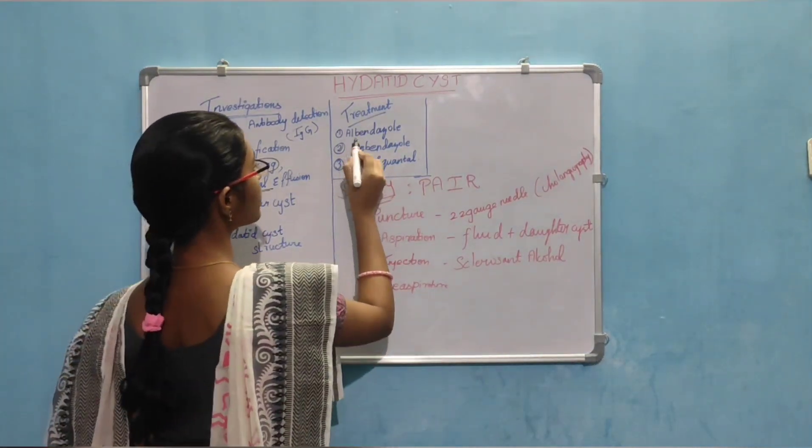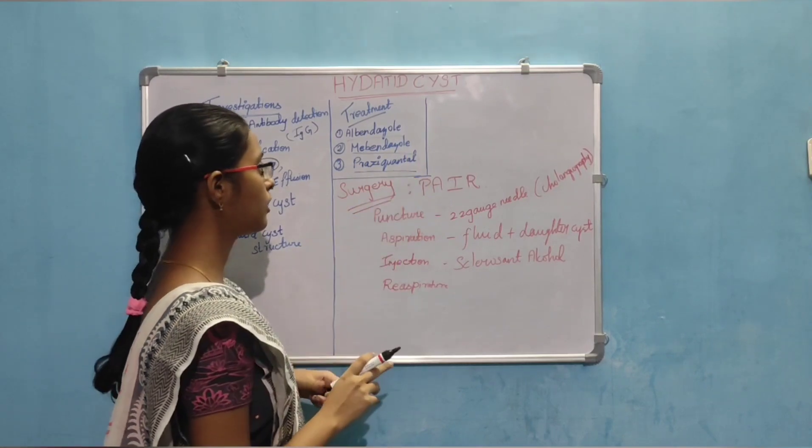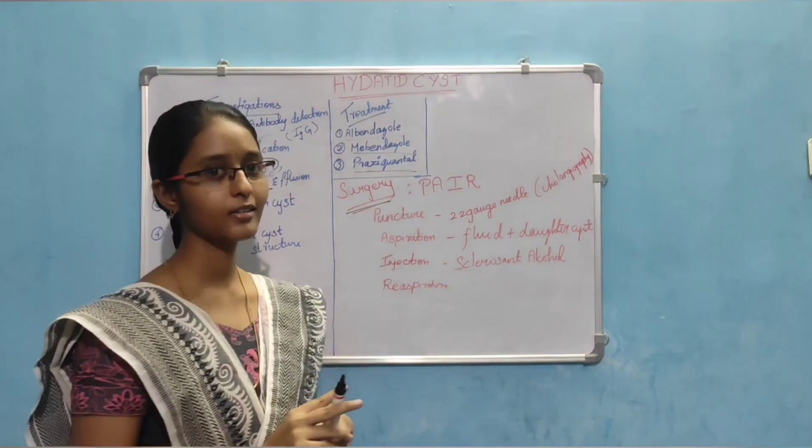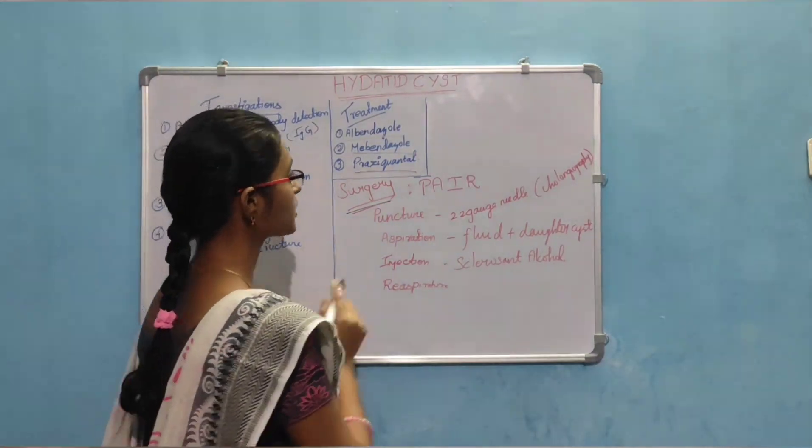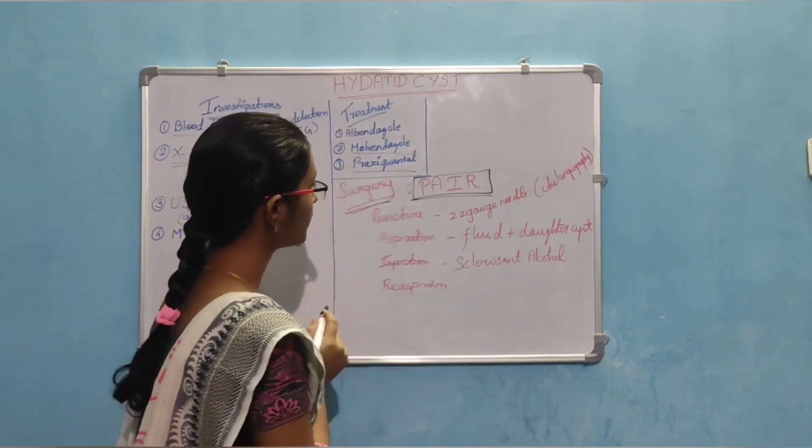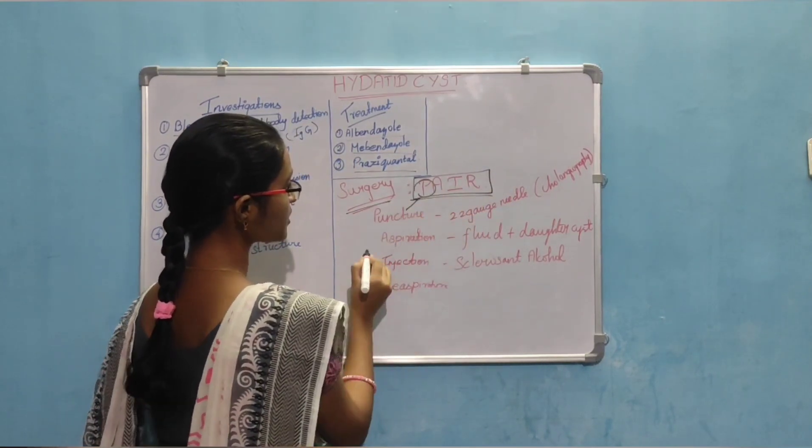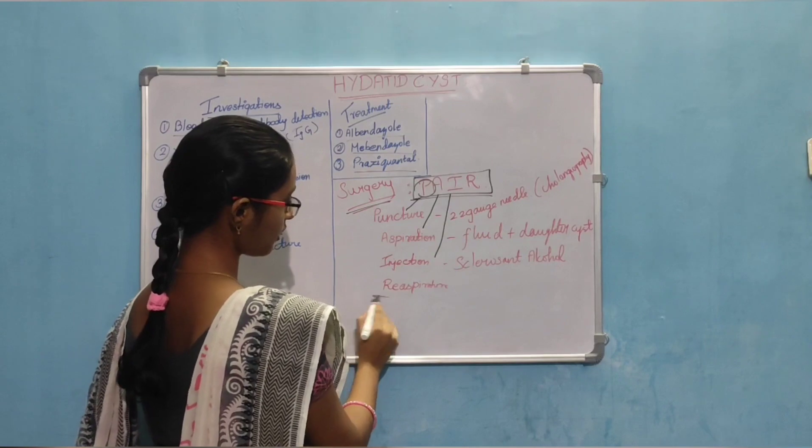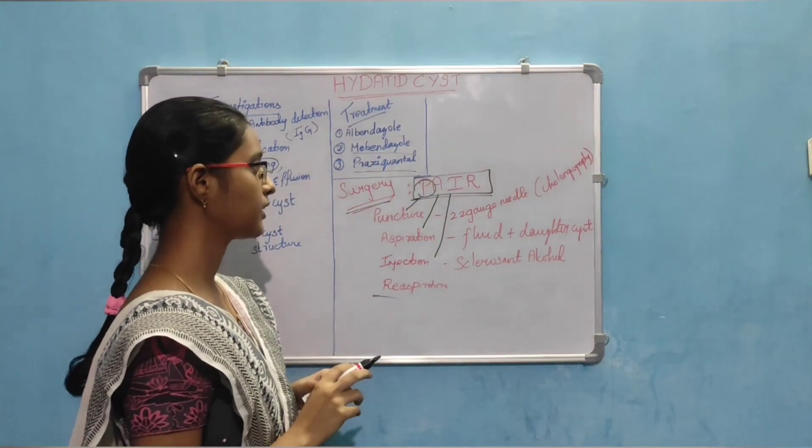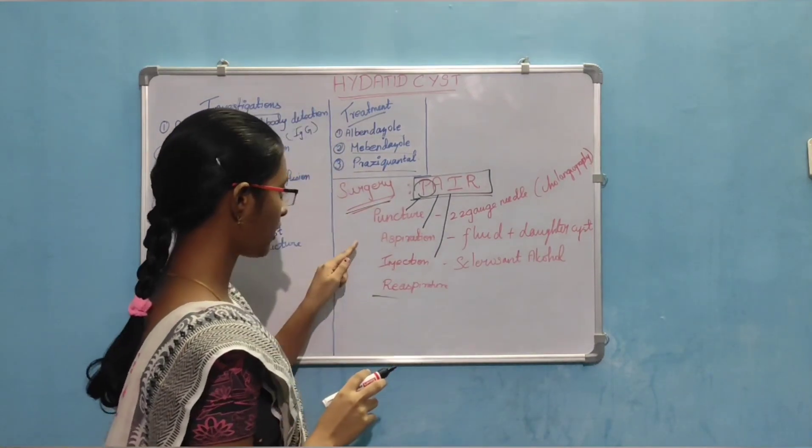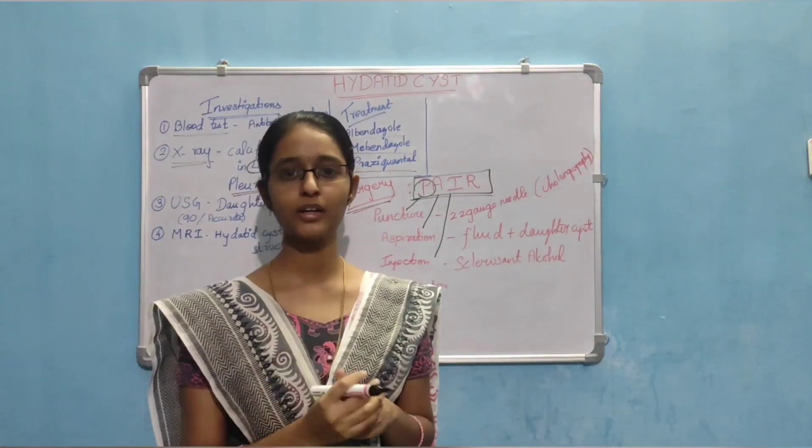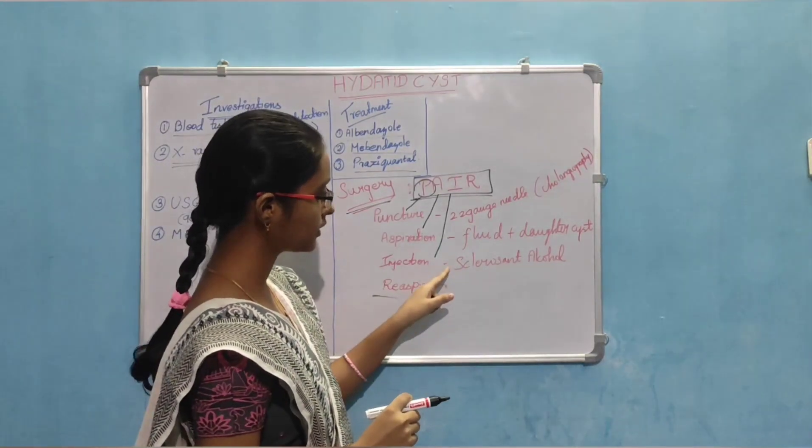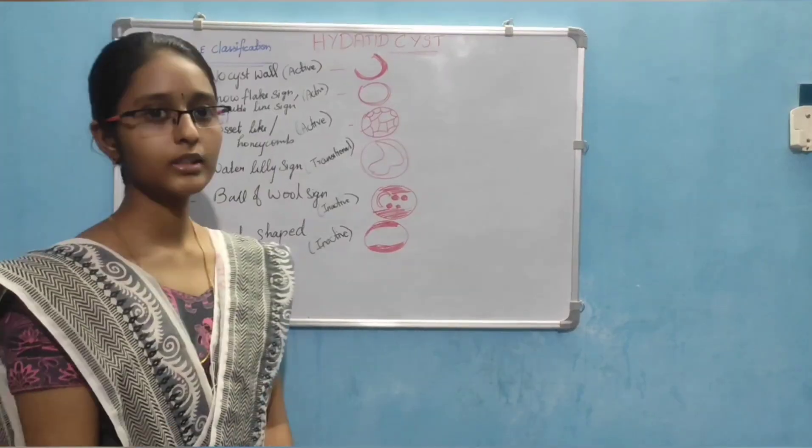Treatment is albendazole, mebendazole, and praziquantel. As well as if it is severe, we go for surgery. And we can remember it as PAIR. P for puncture, A for aspiration, I for injection, and R for reaspiration. Puncture is done using 22 gauge needle. Aspiration is done as well as injection with sclerosant alcohol injection.